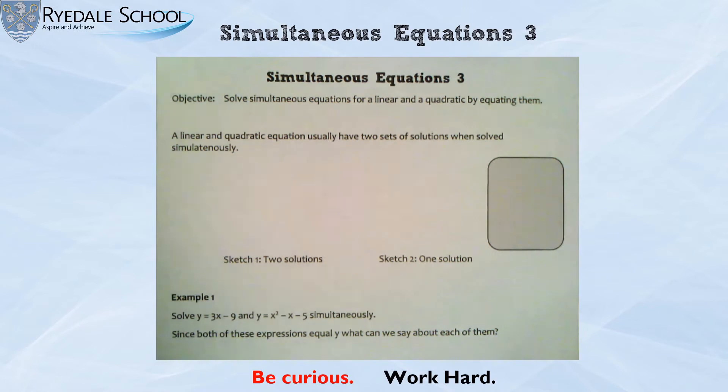So our objective for today is solve simultaneous equations for a linear and a quadratic by equating them and I'll explain what that means in a moment. And I've also gone on to just quickly explain two different scenarios that can happen. Technically there are three scenarios but two different scenarios that can happen with a quadratic graph and a linear graph.